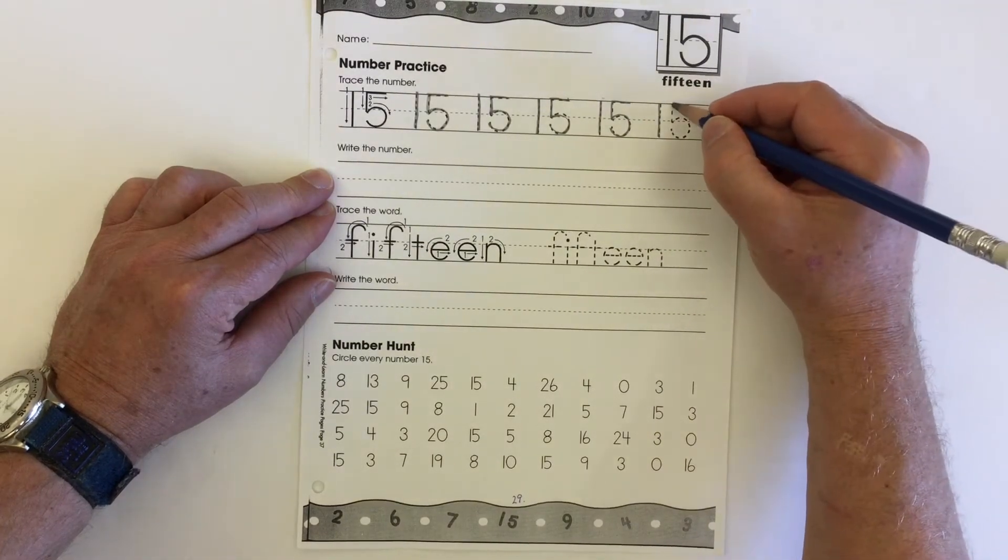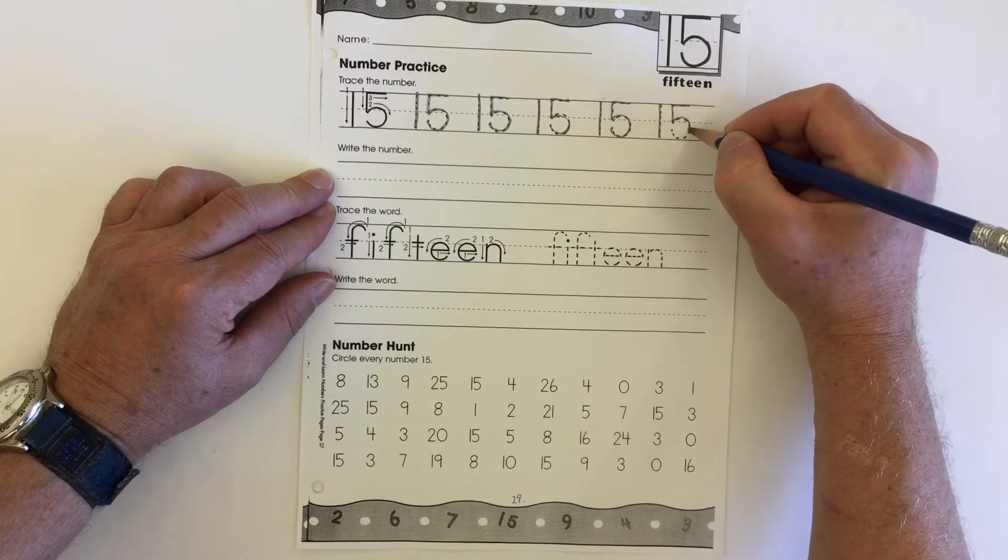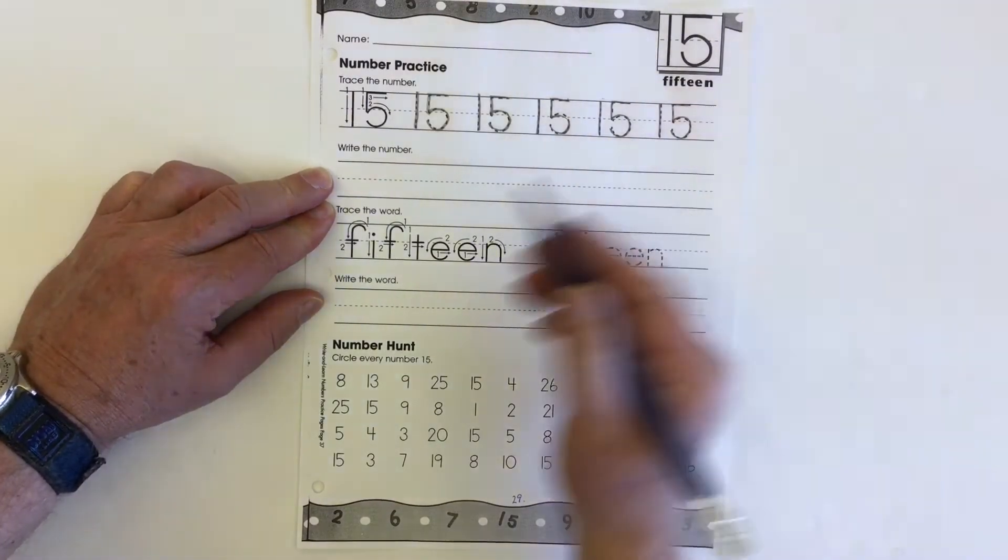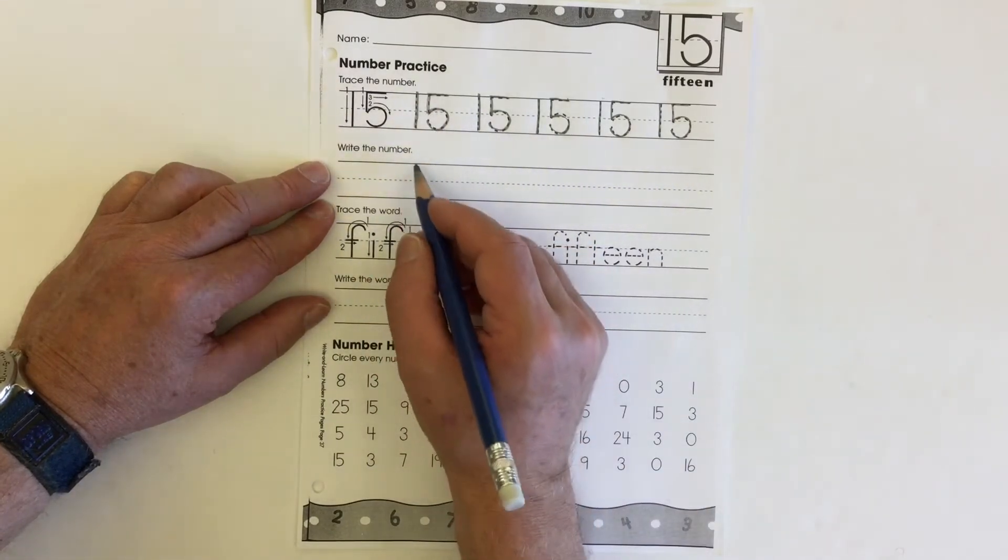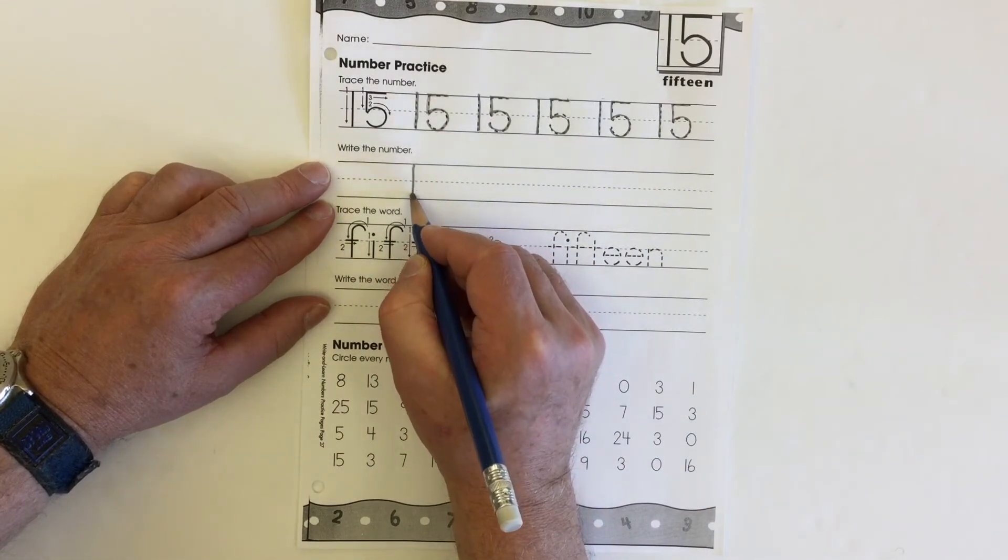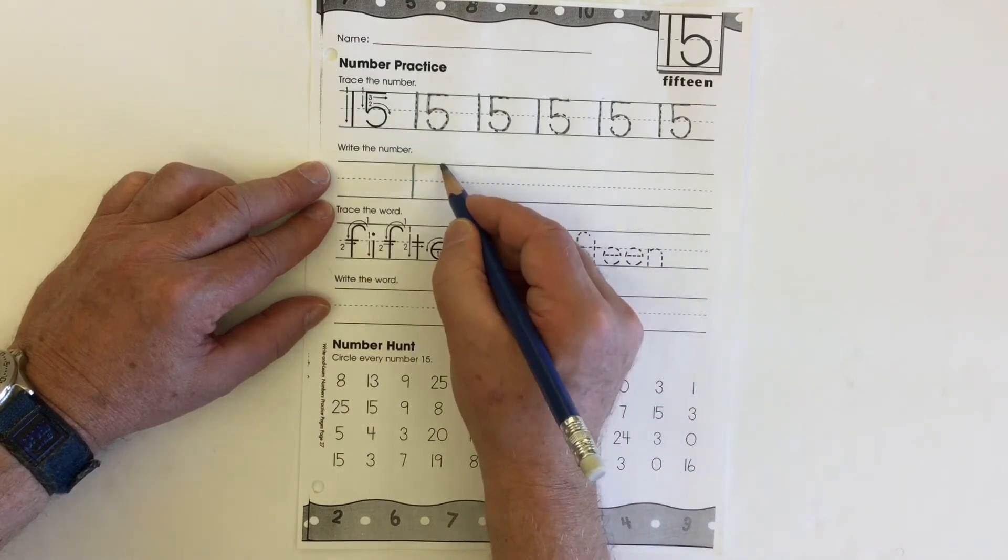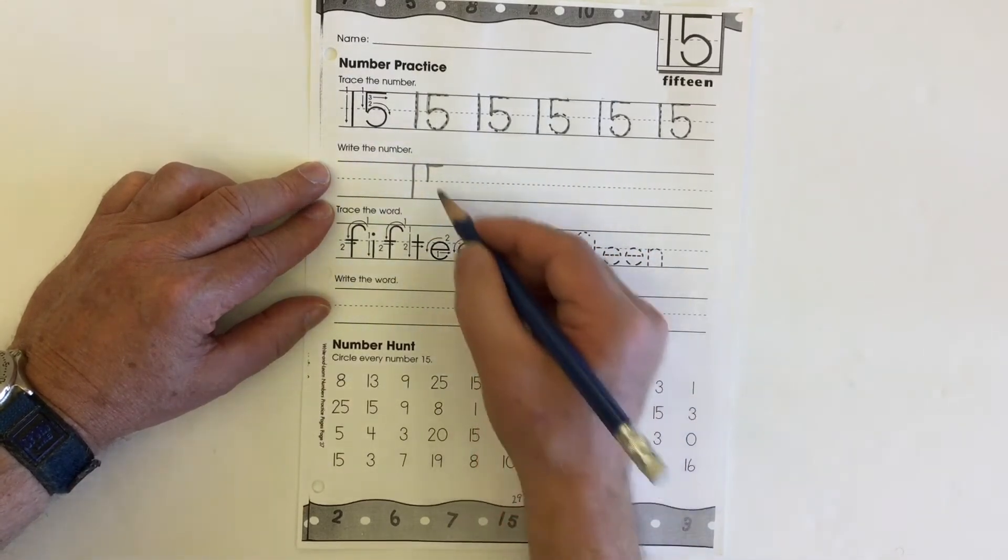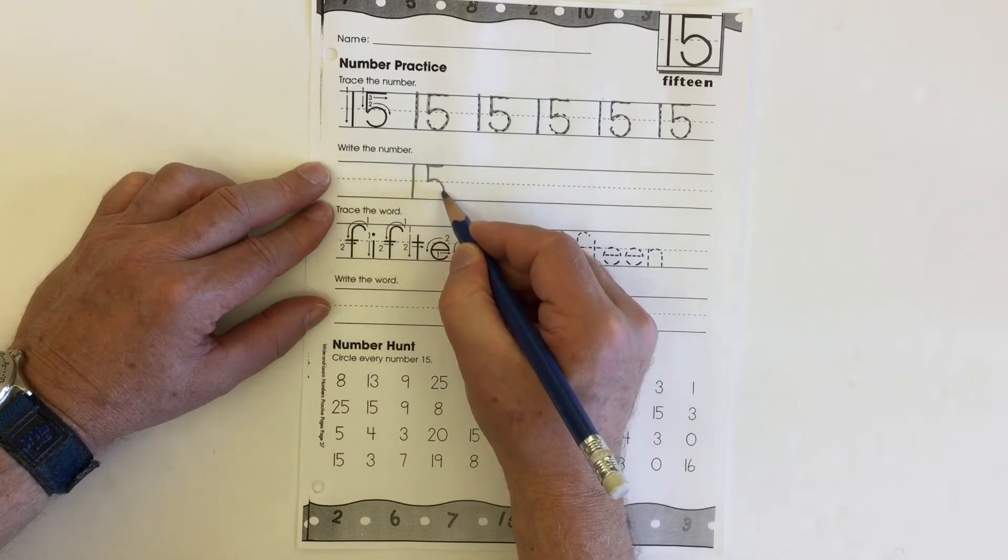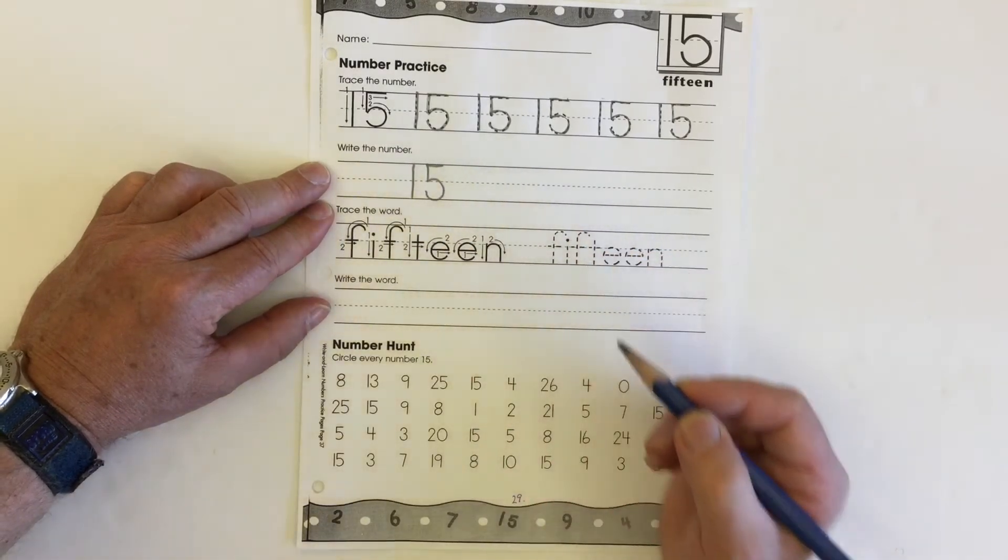One, and then the five: cross, down, circle around. Let's do some more practice 15s. We'll do five of them. Line them up with the ones that are above. So here's our one from the top line to the bottom. Our five, we go across, down to the middle, and do almost a circle that comes around and touches the bottom.